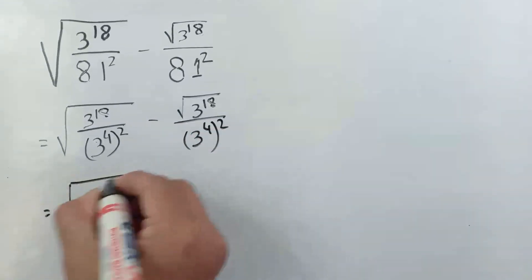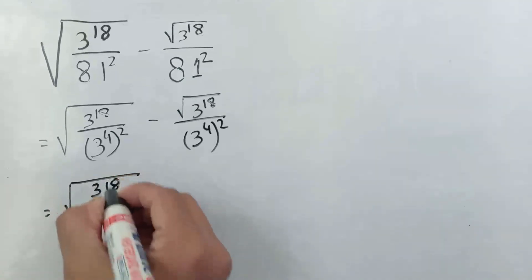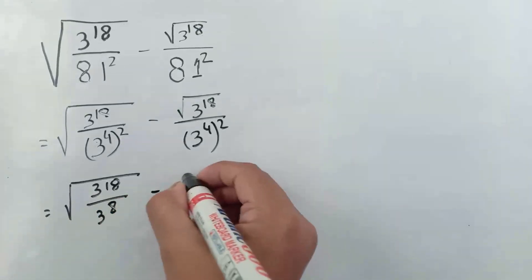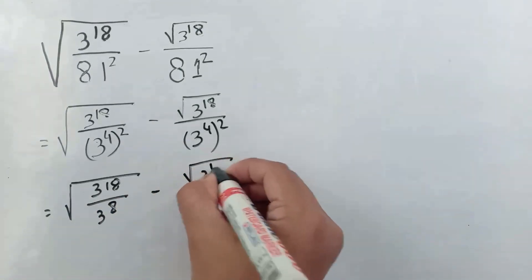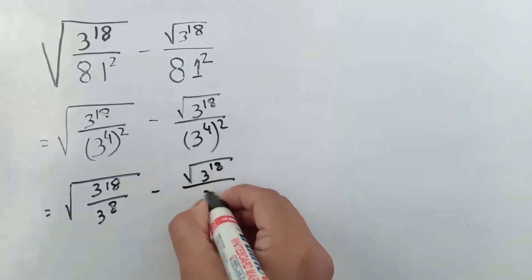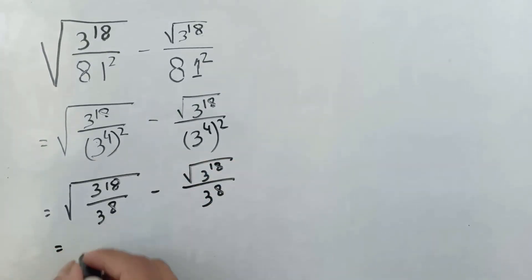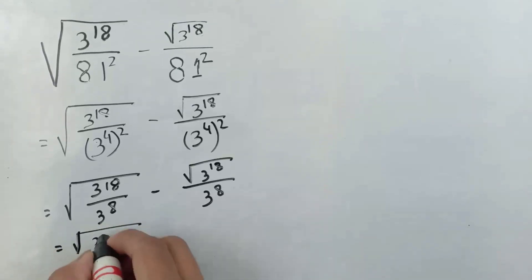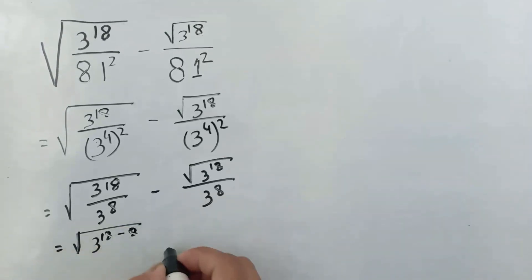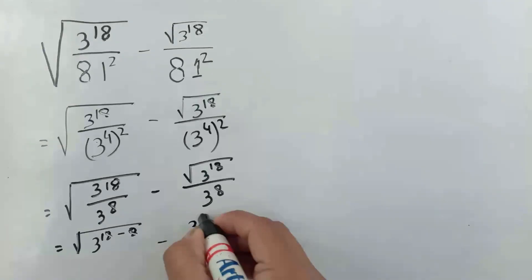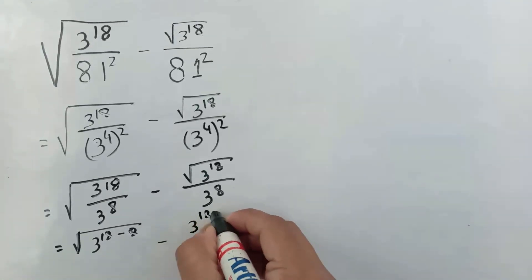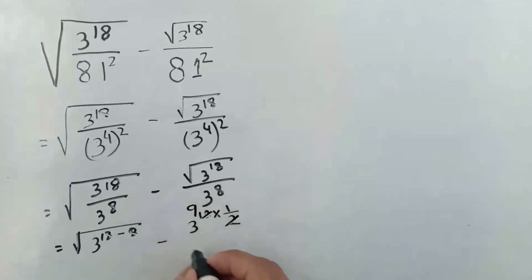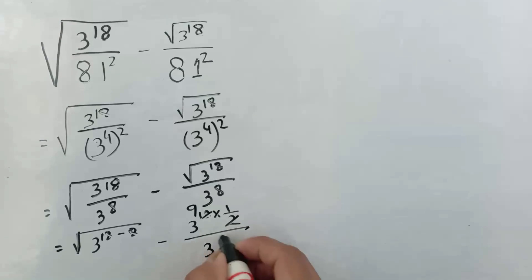So it comes 3 to the power 18 by 3 to the power 8. From here we get square root of 3 to the power 18 minus 8. We can write square root of 3 to the power 18 as 3 to the power 18 times 1 by 2, so it comes 3 to the power 9 by 3 to the power 8.